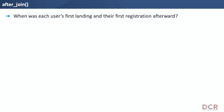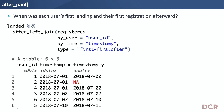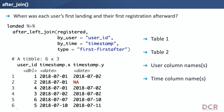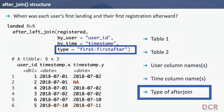Let's dive into funnel join. What is this magic package? Let's take that question: what was the first landing and the first registration afterward? Here's how funnel join addresses this with the `after_join` function. We start with table one — the first event, landed — then table two — registered. We do a left join by writing `after_left_join`. Then we specify the user column, the time column names, and finally the type of after join. The type is what funnel join is contributing: in this case, first landing and first after registration.